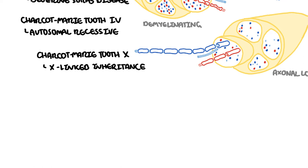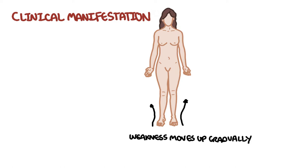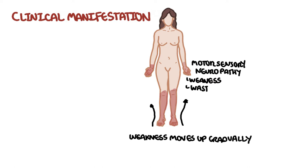The clinical manifestation of Charcot-Marie-Tooth disease, broadly speaking, is a slowly progressive condition where weakness begins in the lower legs and then gradually moves up the limbs — thus it is a neuropathy. You get motor and sensory neuropathy causing distal symmetrical weakness, muscle wasting, hyporeflexia or areflexia, and associated skeletal deformities.